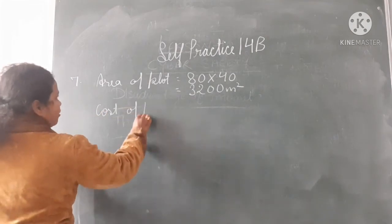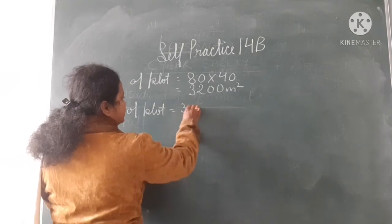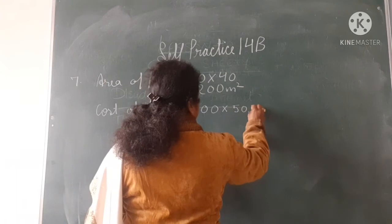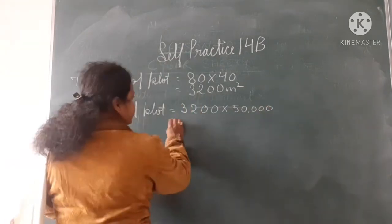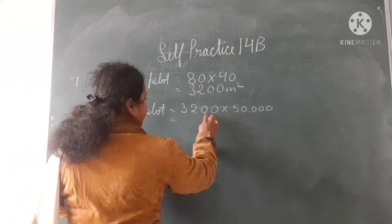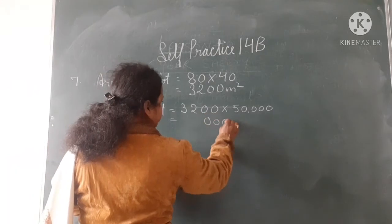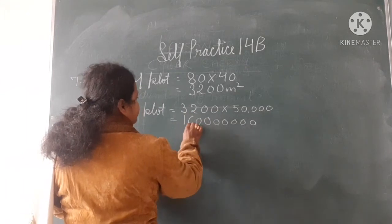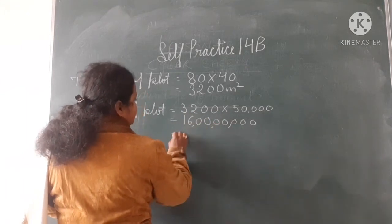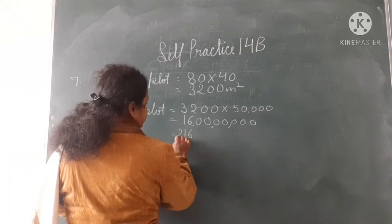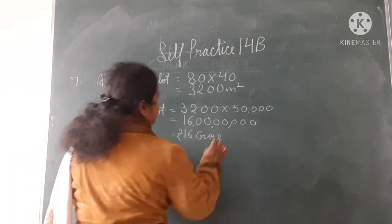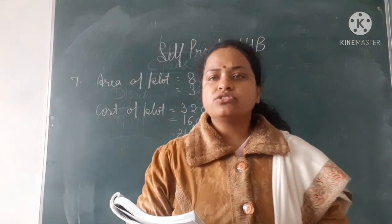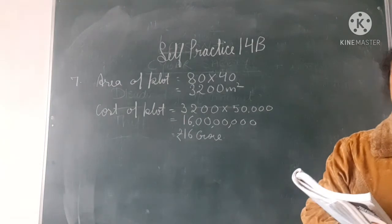Cost of the plot is equal to 3,200 into 50,000, which is equal to 16 crore. So how much you are getting? 16 crore. This is the cost of the land.